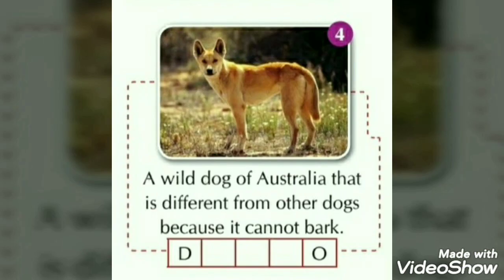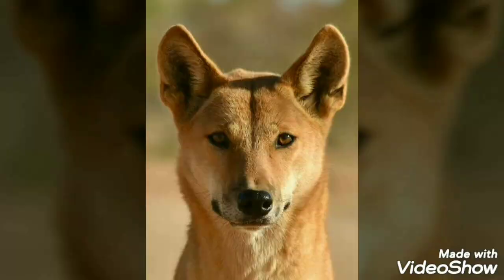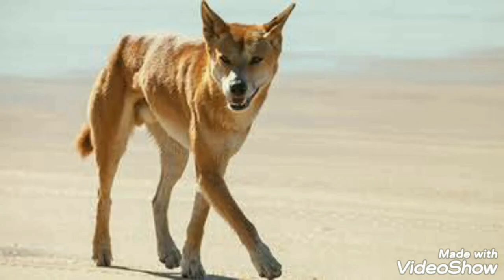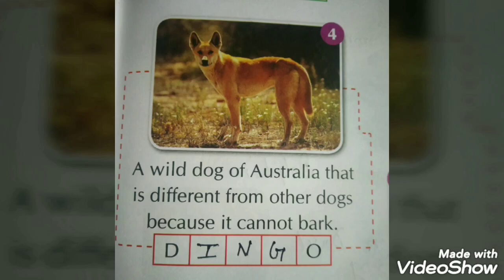Fourth is a wild dog of Australia that is different from other dogs because it cannot bark. A dog which cannot bark — isn't it special? There are other dogs too who are barkless, like Basenji. But this one is Dingo.